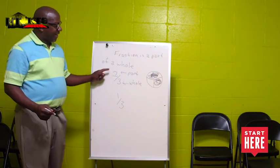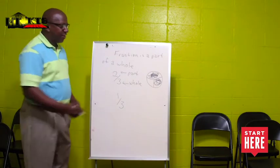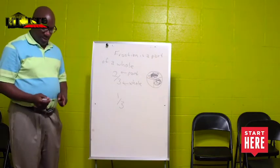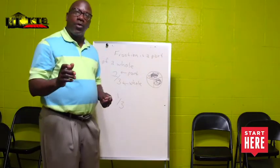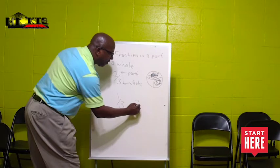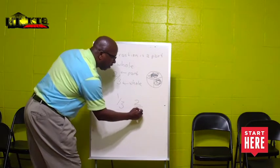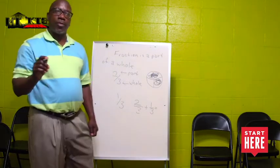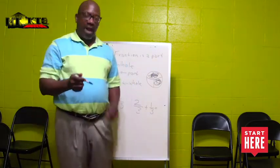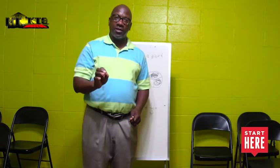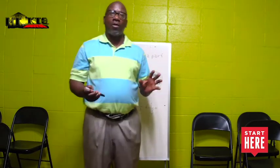I take this two thirds and this one third and put them together. Two thirds plus one third gives me the whole. Let's talk about how we would add this to get the whole. I have two thirds plus one third. It's important to remember, when working with fractions, the only way I can add or subtract two or more fractions is that all fractions must have a common denominator.